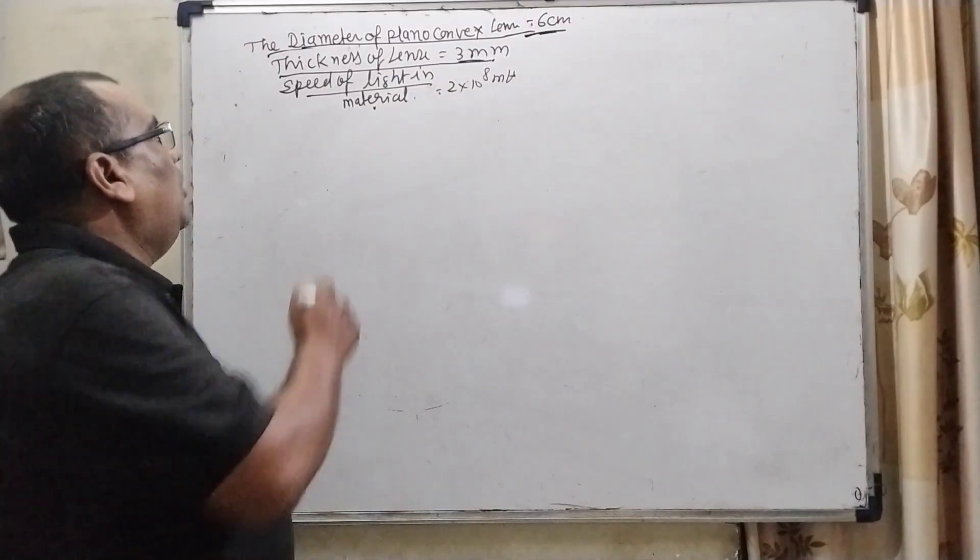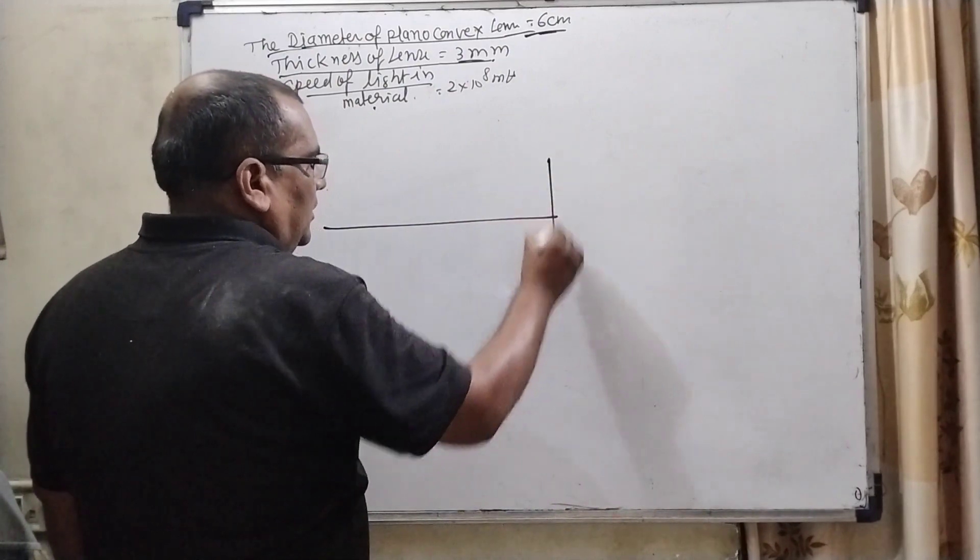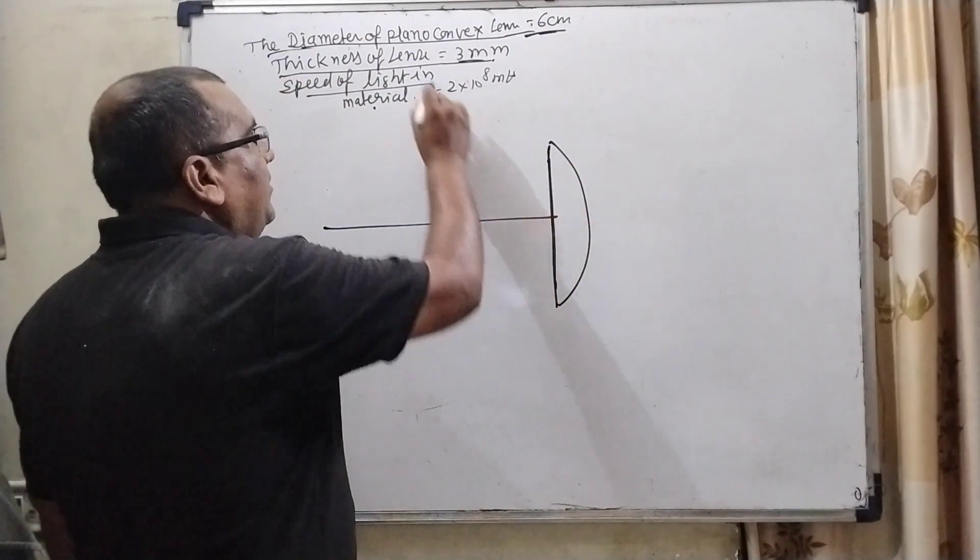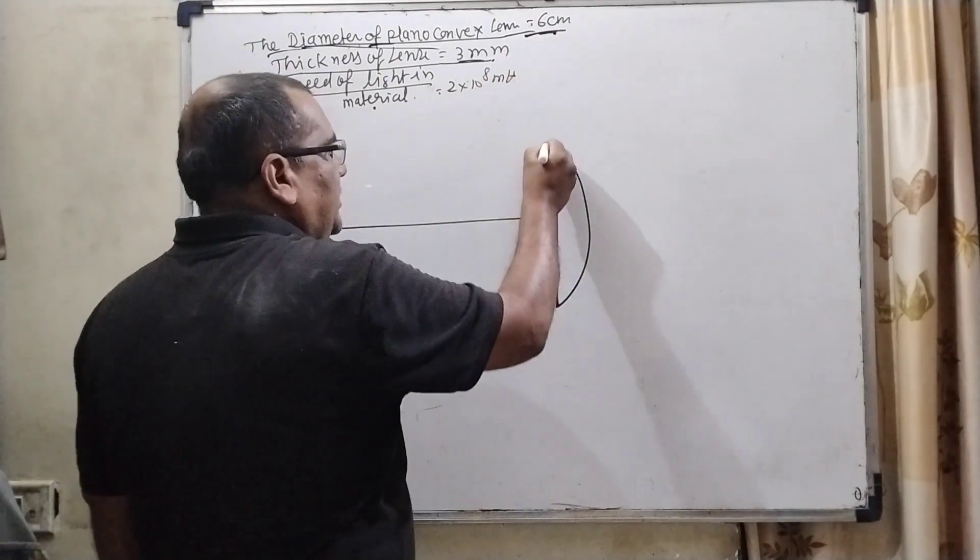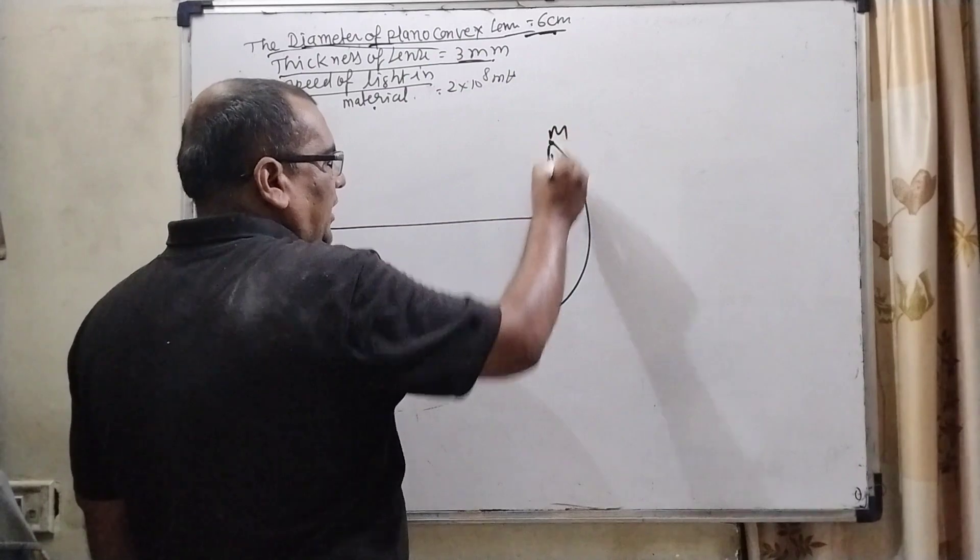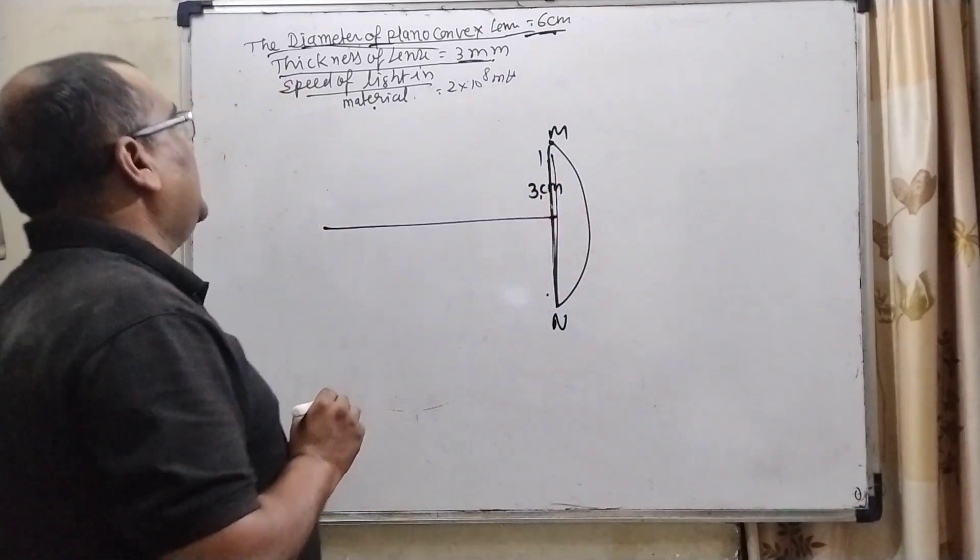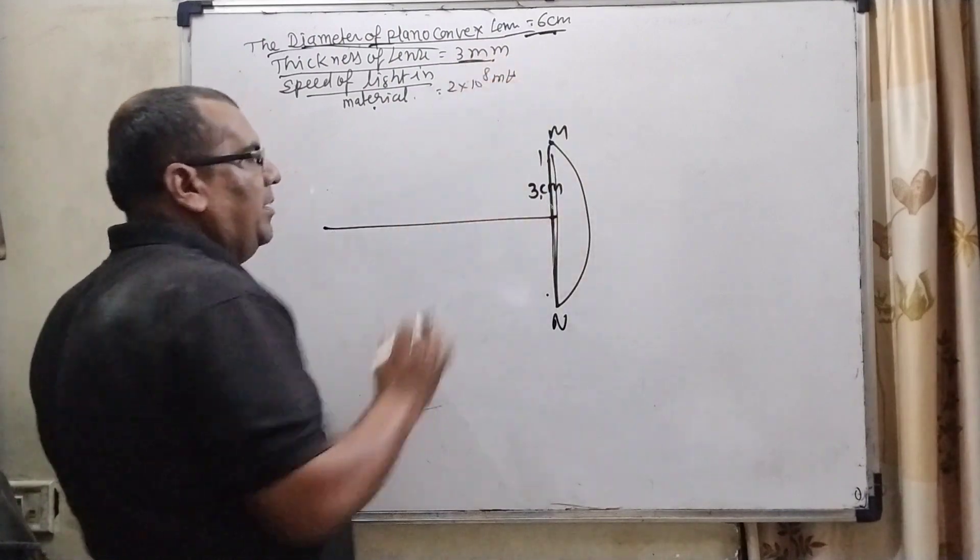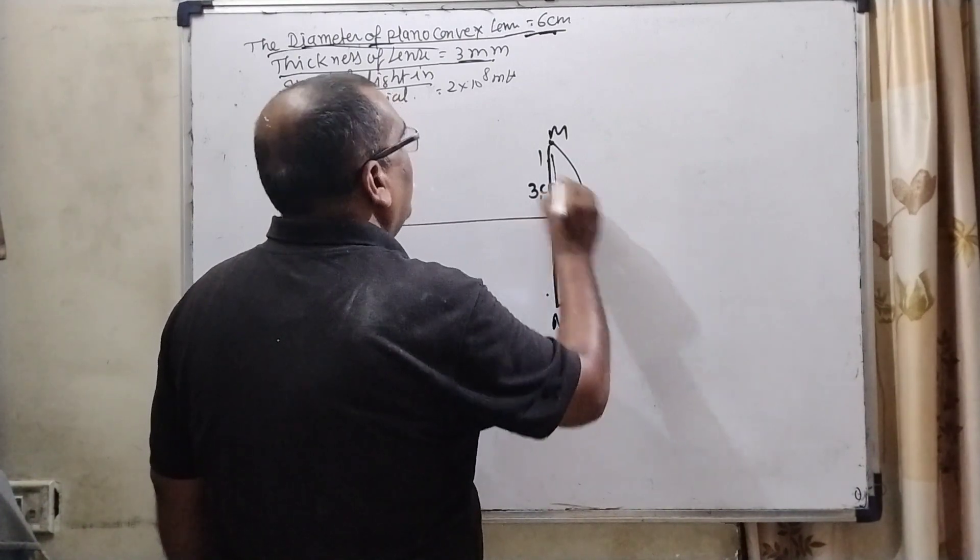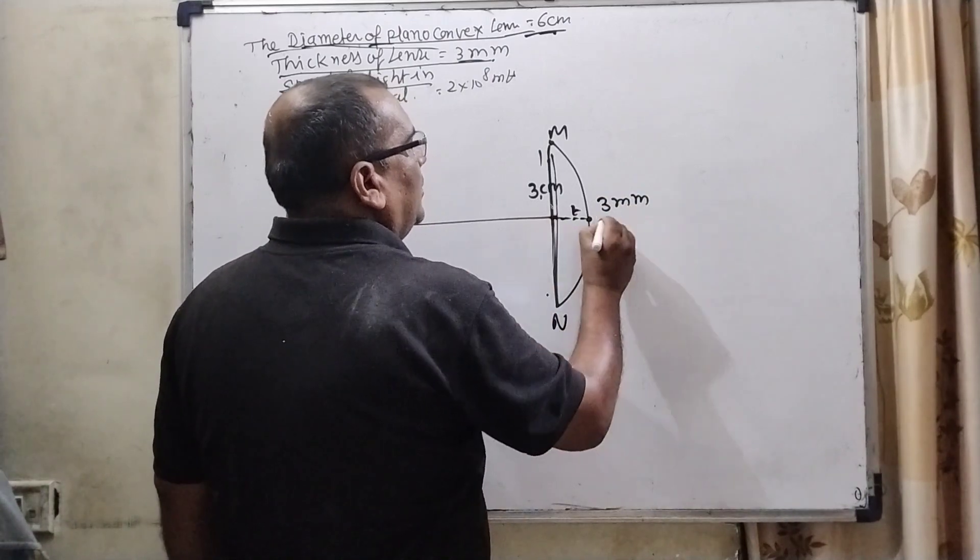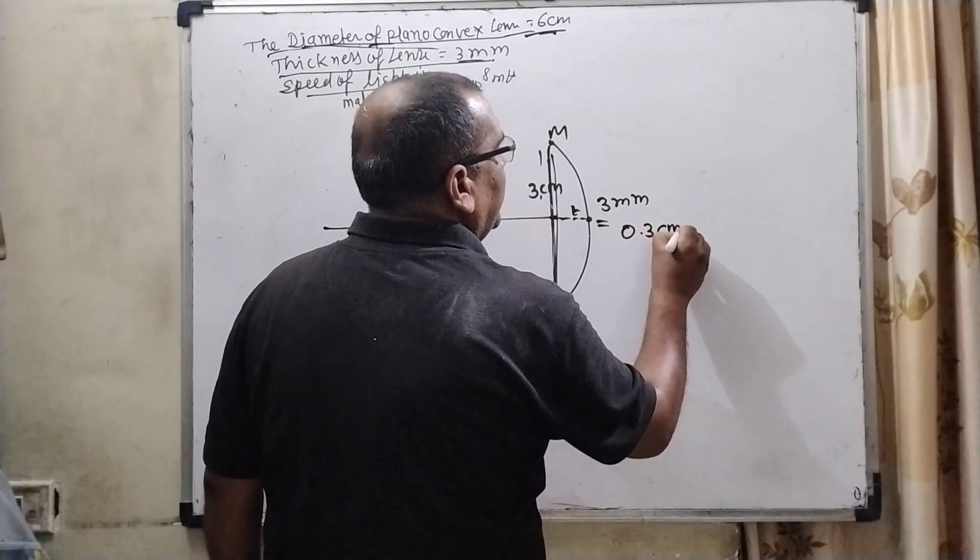Now, according to the question, all the information is given that the diameter of the plano-convex lens, here plano-convex lens. And diameter, here diameter means aperture of this lens, given that 6 cm, it means total length 6 cm. So one end, let us say M and N. So this distance is 3 cm. And second information is given that thickness of the lens is 3 mm. Thickness means this distance. And what is thickness? 3 mm. So let us first convert to centimeter divided by 10, then we get 0.3 cm.